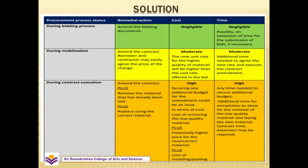The first stage of the procurement process is during the bidding process. We would amend the bidding documents, and the cost would be negligible. Time would also be negligible, with possibly an extension of time for the submission of bids if necessary.